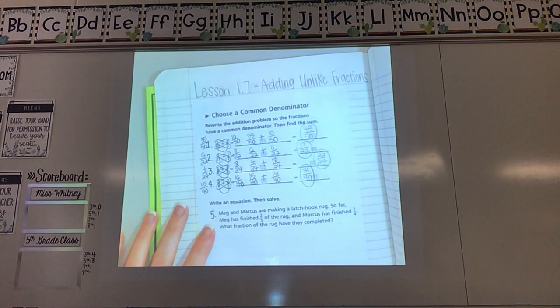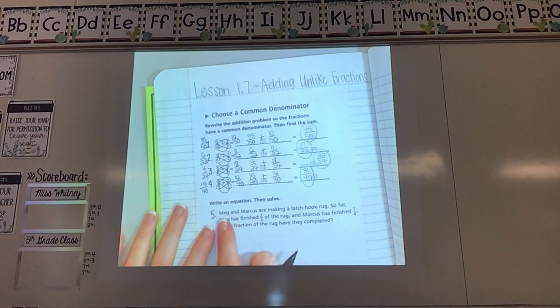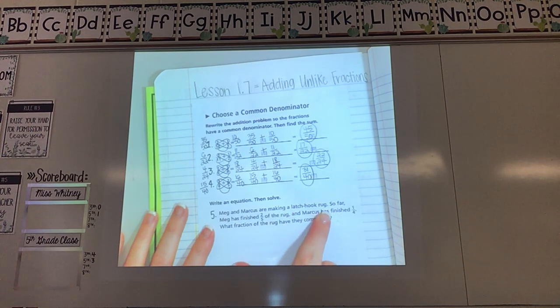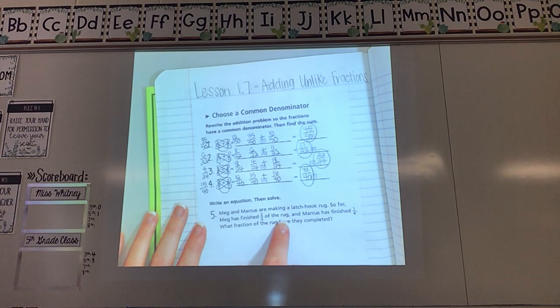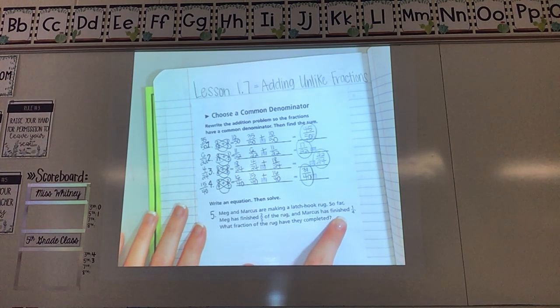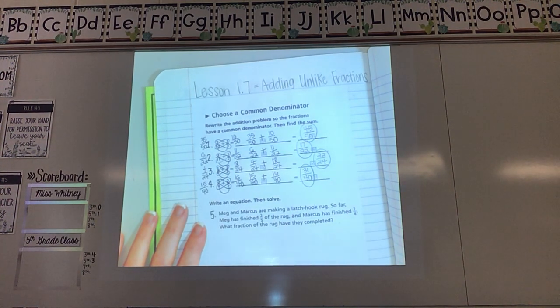Alright, and number 5 down here. I threw in a word problem just to make sure that we can do it with a word problem as well. Meg and Marcus are making a latch hook rug. So far, Meg has finished 2 fifths of the rug, and Marcus has finished 1 fourth. What fraction of the rug have they completed?